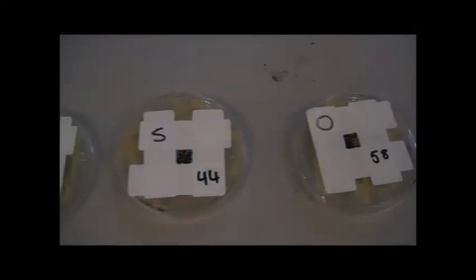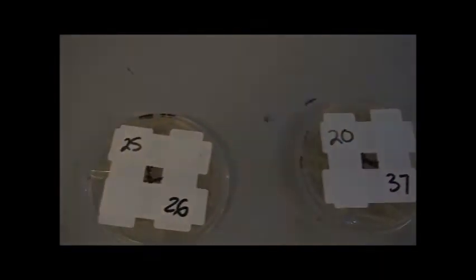Starting with the control plate, I counted 58 colonies of bacteria within the 1cm squared area. The 5-second plate contained 44, the 10-second plate had 41, the 15-second plate had 39, the 20-second plate had 37, and the 25-second plate contained 26 colonies.